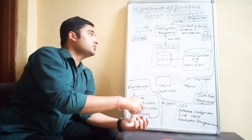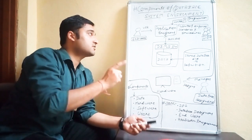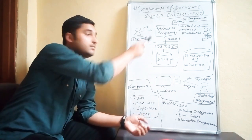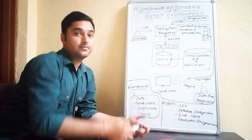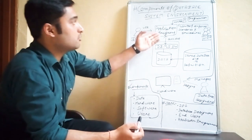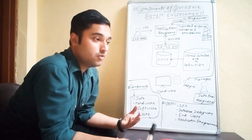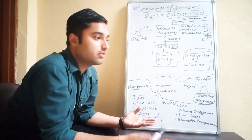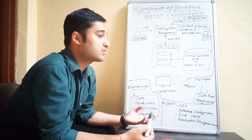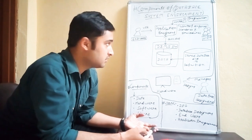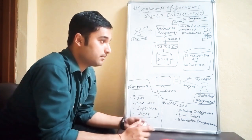You don't have to remember all the stuff I have written on the board. You simply have to remember three things: the first one is application program, then the DBMS software, and then the data. The application program is something which deals with the end user — for example, you are the end user, or any person in the world who actually uses the database system.